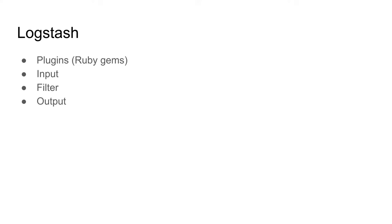Logstash started as a very simple tool — take your logs and stash them in Elastic to make analysis easier. But it grew into a very powerful ETL pipeline with several hundred different plugins. The plugins in Logstash are just Ruby gems, so if you're familiar with Ruby it's easy to understand what they do. You can have input, filter, and output plugins.